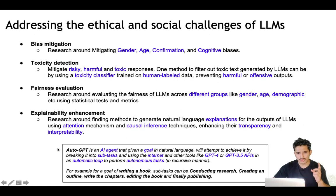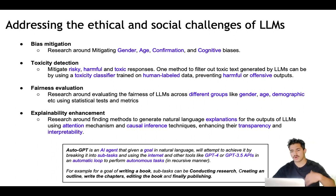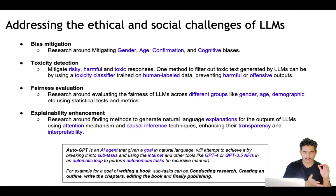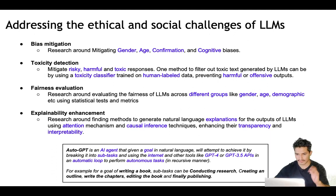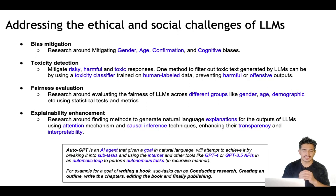One more topic getting a lot of popularity is AutoGPT. AutoGPT is an AI agent — a coded AI agent that, given a goal in natural language, attempts to achieve it by breaking it into subtasks and using internet tools like GPT-4 or GPT-3.5 APIs in an automatic loop to perform autonomous tasks. For example, if we give it the goal of writing a book, the subtasks can be: conduct research, create an outline, write the chapters, edit the book, and publish — for each subtask it can recursively call the internet or GPT APIs to solve it.